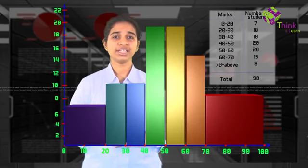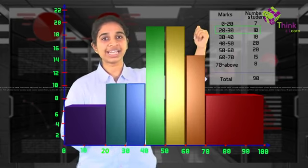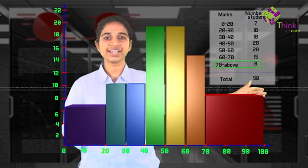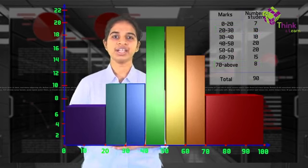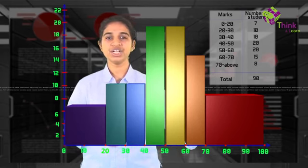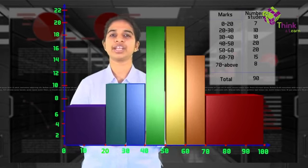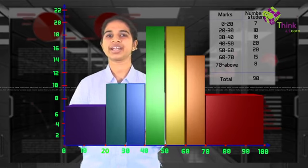But actually, if you look at the number of students in the 20 to 30 range, there are 10 students, and in the 70 to 100 range, there are only 8 students. So this is not correct. The 70 to 100 rectangle should have actually had a smaller area. Why is this happening?